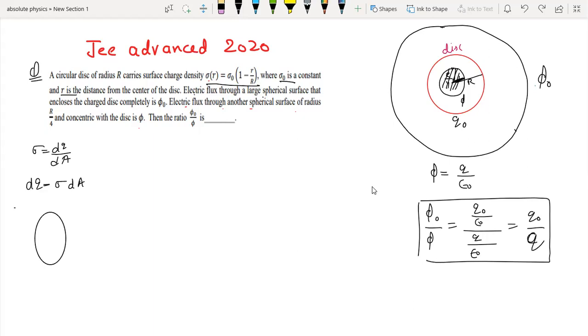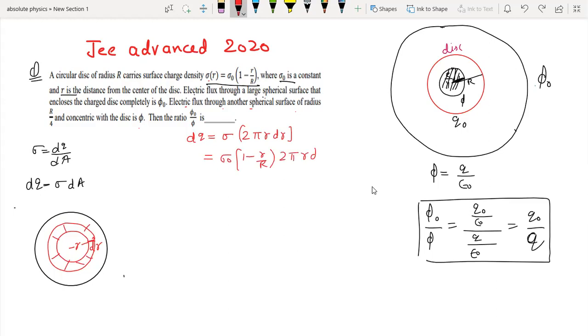Let's assume a disk. Since charge density is variable, we need to consider an elemental ring at distance R with width dR. So dQ will be equal to sigma into dA. dA is the ring area, which equals 2 pi R into dR. Substituting sigma naught times 1 minus R by capital R into 2 pi R dR, we get sigma naught 2 pi R dR minus R squared by capital R dR.